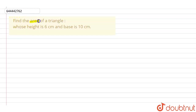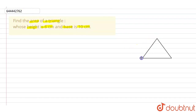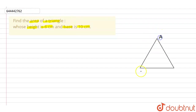In this particular question, we have to find out the area of the triangle whose height is given as 6 centimeters and the base is given as 10 centimeters. First of all, let us draw this triangle. Let's suppose this is our triangle with points A, B, and C.